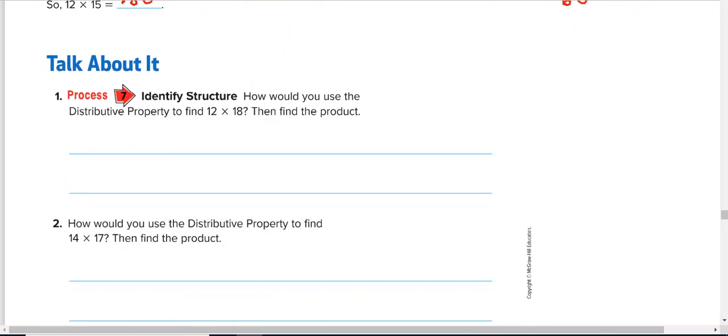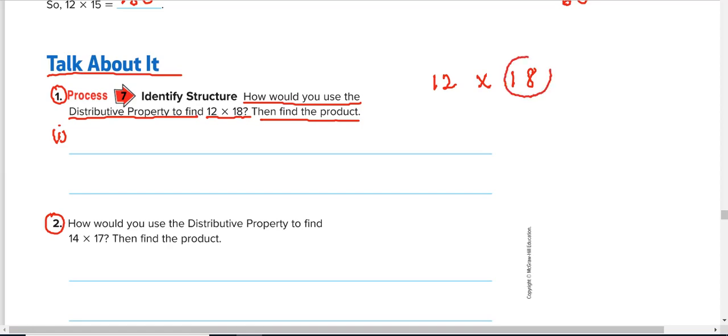And that takes us to this talk about it. Two questions and we are done for today. The first one wants us to ask, how would you use the distributive property to find 12 times 18? Then find the product. Very easy. What are the steps involved? Remember, I think there are about three steps. Step 1 is separate this number 18.